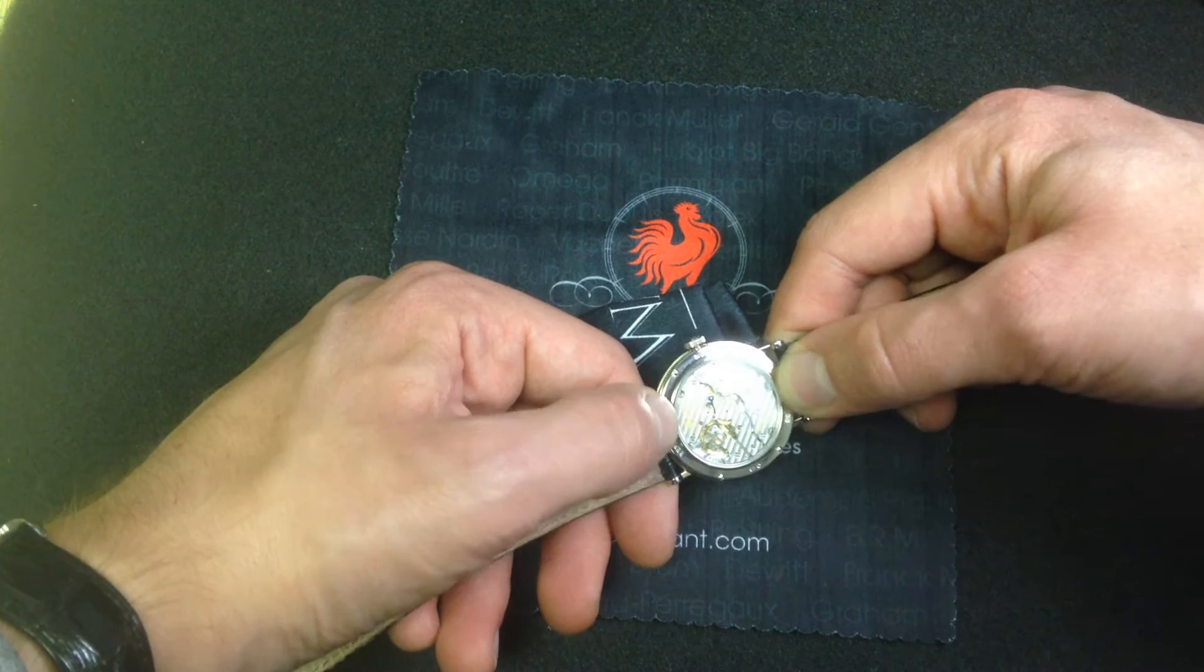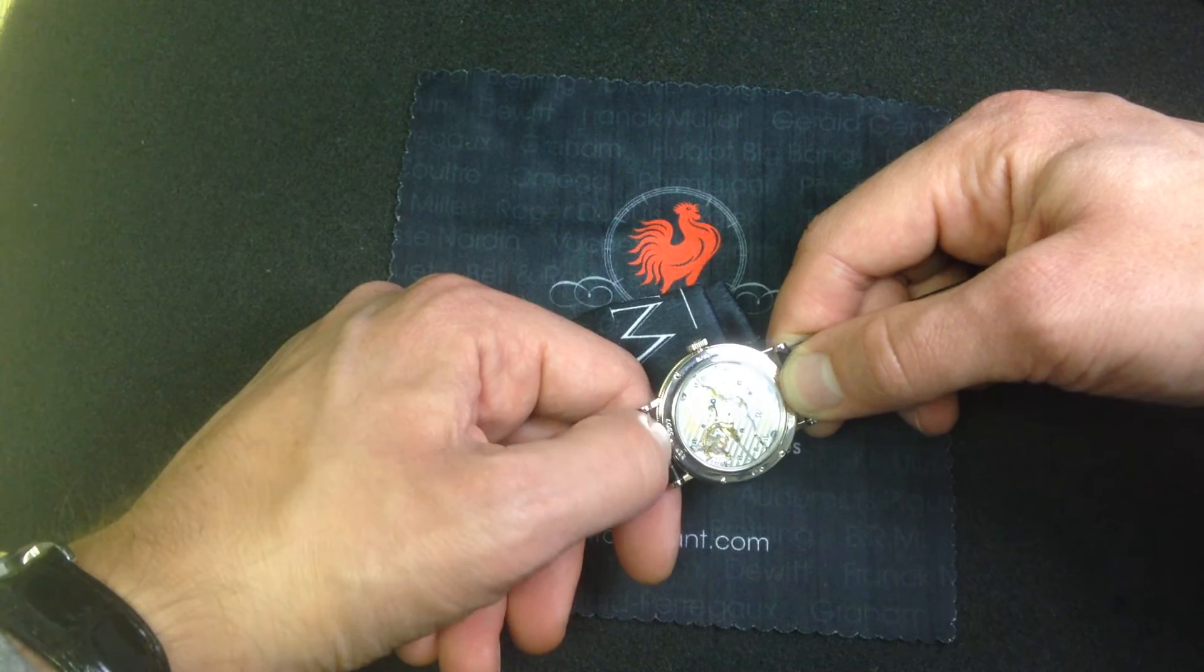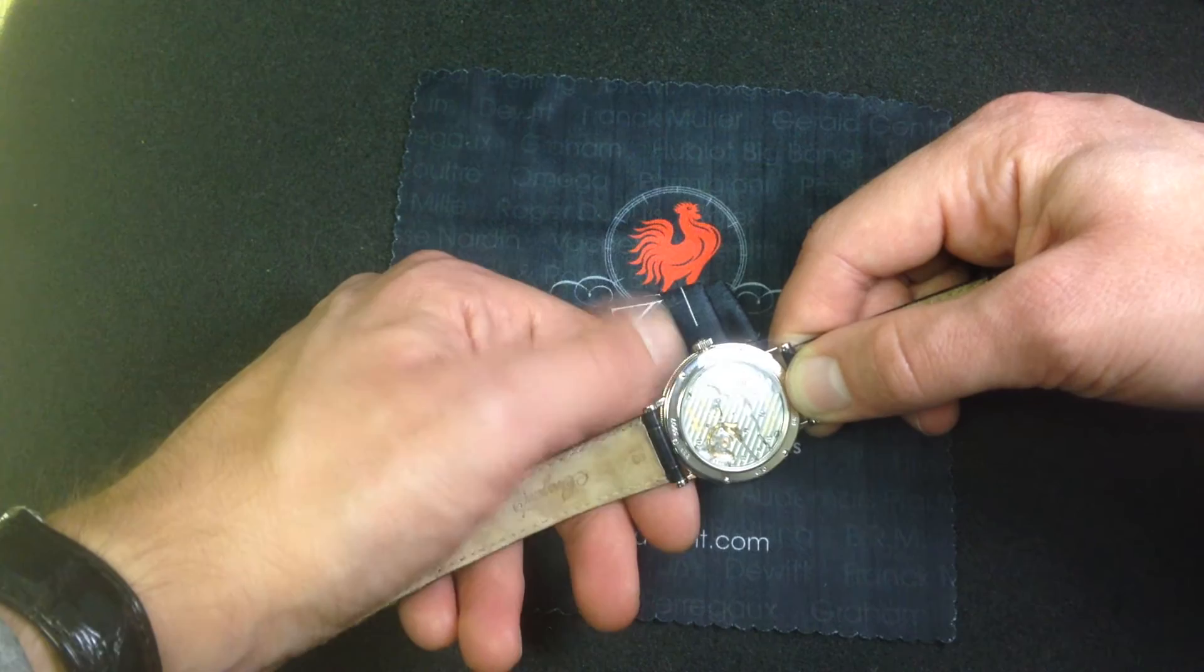The original 510 still featured the birth scars from the automatic winding bridge that had been removed from the movement when it was still the FP, so it wasn't pretty to look at, quite frankly.